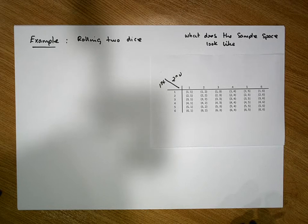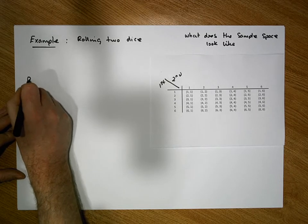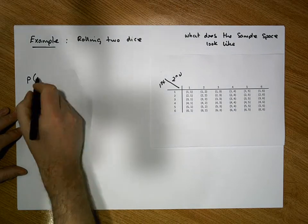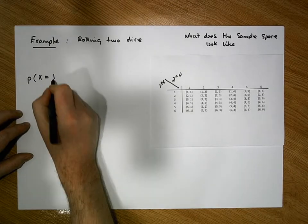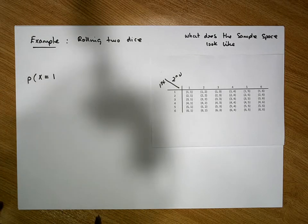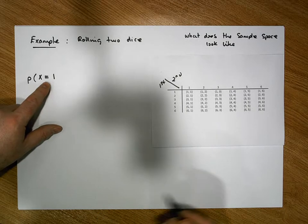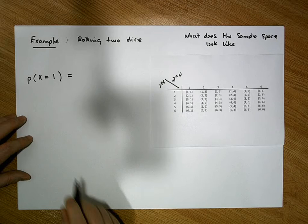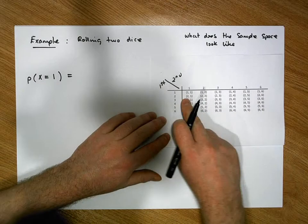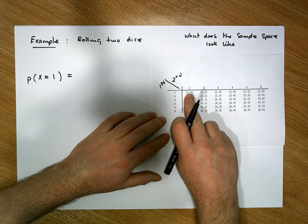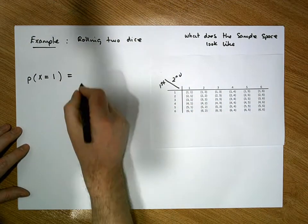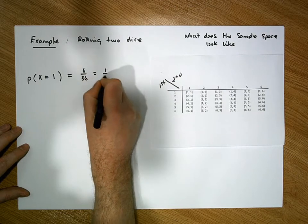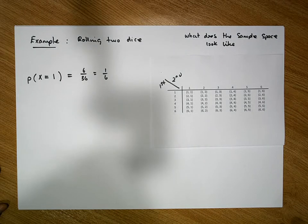Let's ask some probabilities in relation to this sample space. What's the probability that when we roll, the first number is a one and the second number could be any number? We're interested in how many ordered pairs have the first number as a one. There are one, two, three, four, five, six ordered pairs out of a possible 36 — so we have a one-in-six chance of rolling a one on the first die.